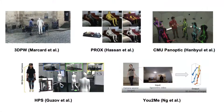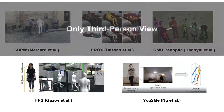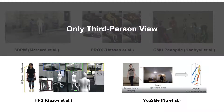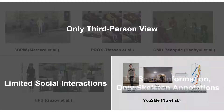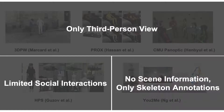Most existing datasets only provide third-person view images, losing important visual cues. On the other hand, existing egocentric view datasets are limited in either social interaction diversities or annotation modalities.